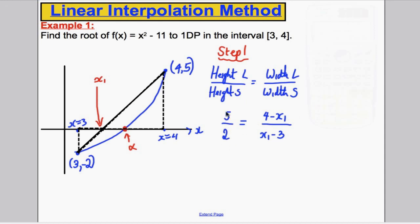So if I multiply both sides by 2 and multiply both sides by x₁ - 3, I would get 5(x₁ - 3) would be 2(4 - x₁). Expanding the bracket, 5x₁ - 15 would be 8 - 2x₁. Collecting all x₁'s together, add 2x₁'s to both sides, add 15 to both sides, I would get 7x₁ would be equal to 23 and therefore x₁ would be 23/7. And that is my approximation for x₁, 23/7.